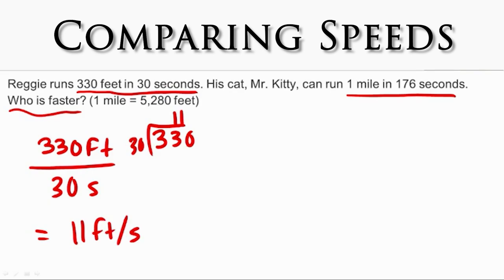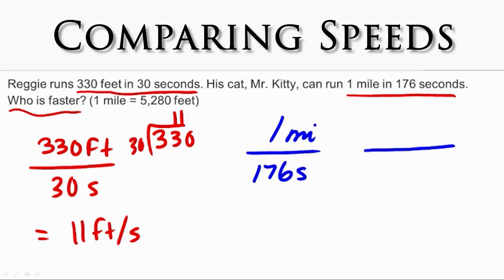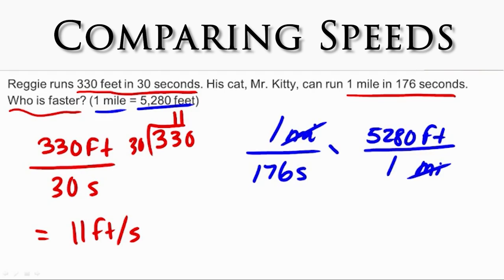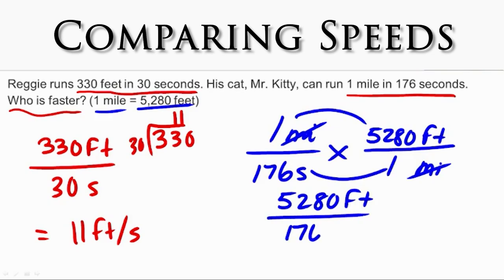Now let's look at Mr. Kitty. Mr. Kitty can run one mile in 176 seconds. Speed is the rate of distance to time, so the distance is one mile and the time is 176 seconds. Miles per second is not the same as feet per second, so we need to do a conversion — we need to convert miles to feet using a conversion factor. We put miles on the bottom and feet on the top. One mile equals 5,280 feet. We cancel the miles unit, then multiply: one times 5,280 is 5,280 feet over 176 seconds. That's not a unit rate, so we divide 5,280 by 176, which gives us 30 feet per second.